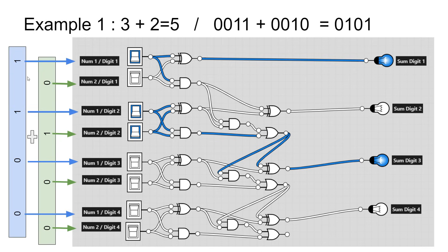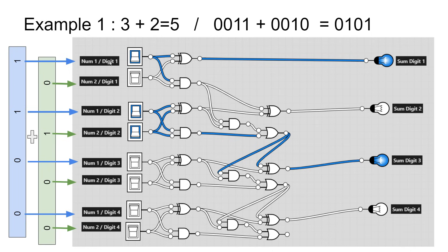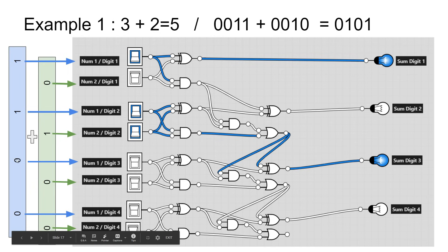Notice how each digit of one number corresponds to the matching digit of the other — the 1 and 0, the 1 and 1, the 0 and 0, the 0 and 0 exist in matching pairs. The two right-hand digits of both numbers get dealt with by the half adder. The second digits go into the second full adder, the third digits into the third, and the final digits into the bottom full adder. Each digit is dealt with as a pair because they're of the same magnitude.